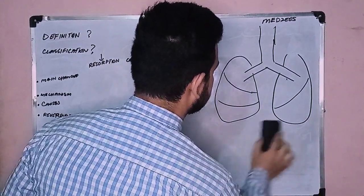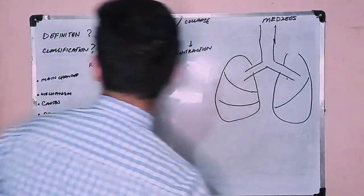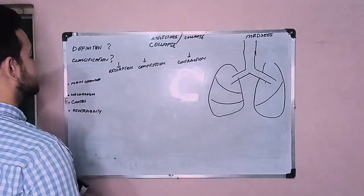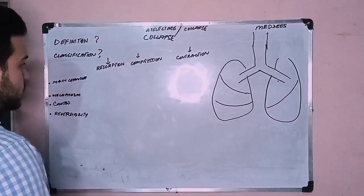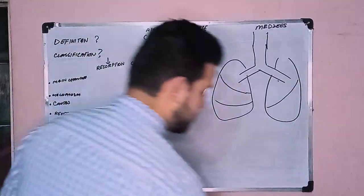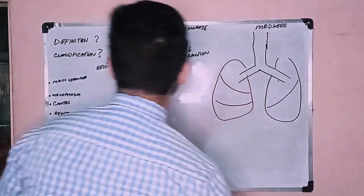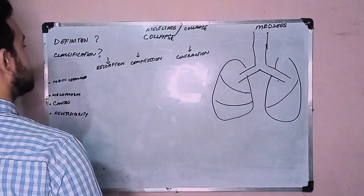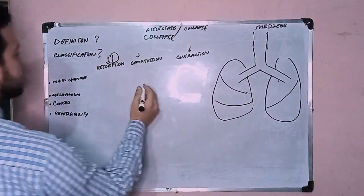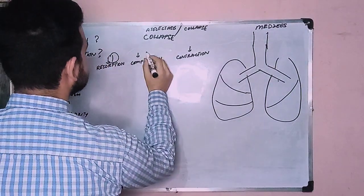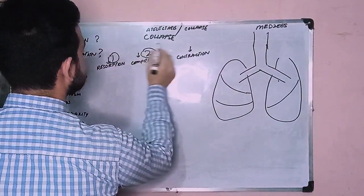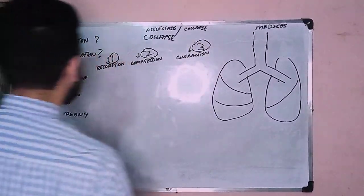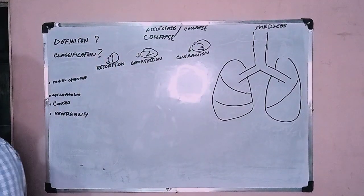To explain it further, I am going to classify atelectasis into three types, which are also written in Robbins, the main textbook. The first one is resorption atelectasis, the second one is compression atelectasis, and the third one is contraction atelectasis.